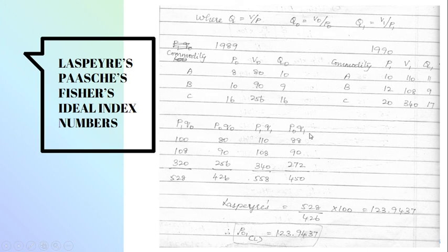Then P0Q1. So this is P0 and this is Q1. 8 into 11, 88. 10 into 9, 90. 16 into 17, 278. This sums to 456.